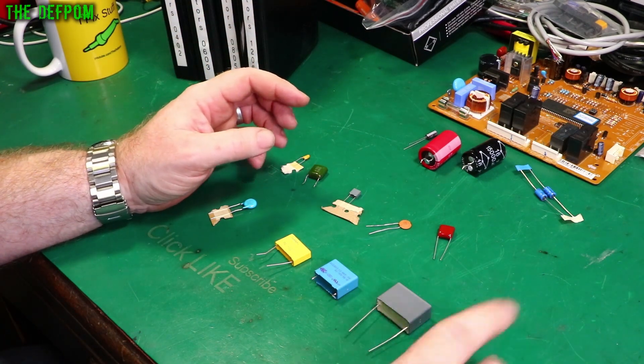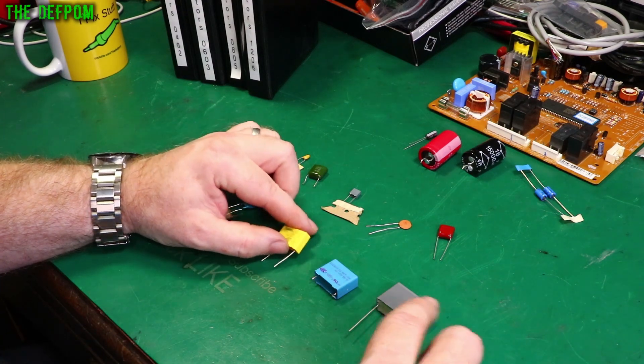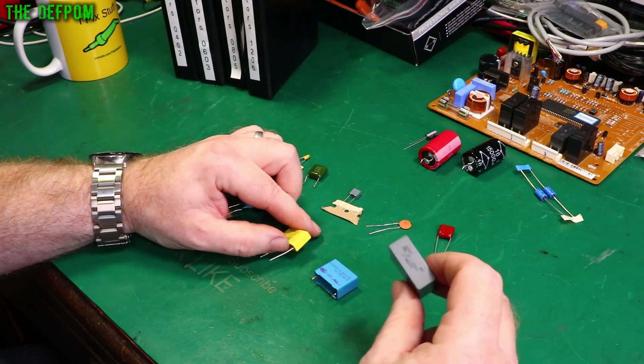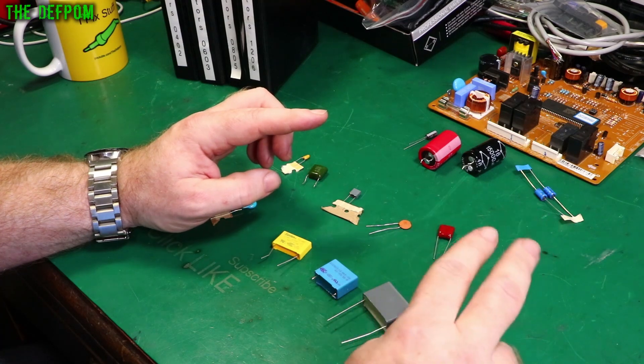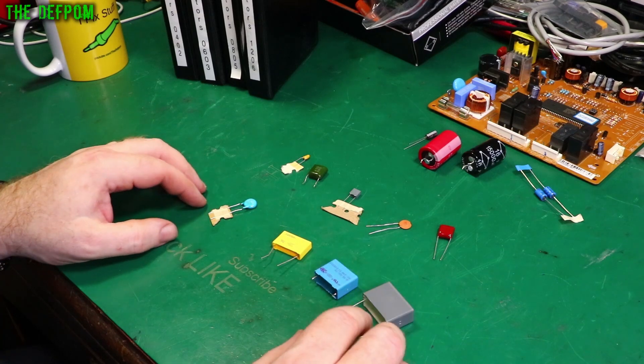These will be across them. So what happens if one of these caps fails, it will short out and short out across your AC input and hopefully blow your fuse. That's the intention of those things.